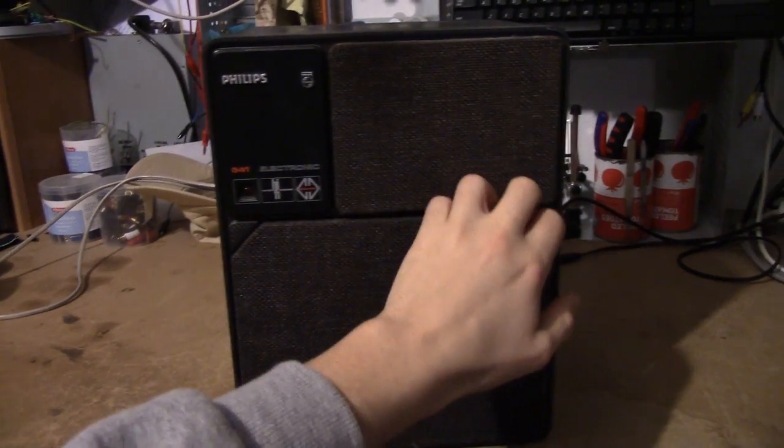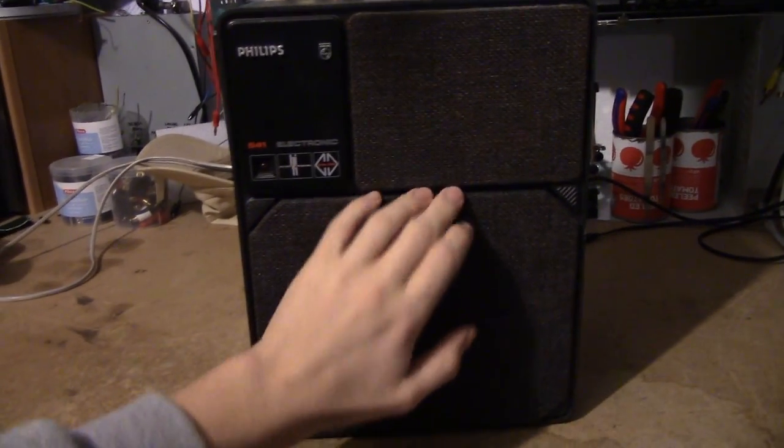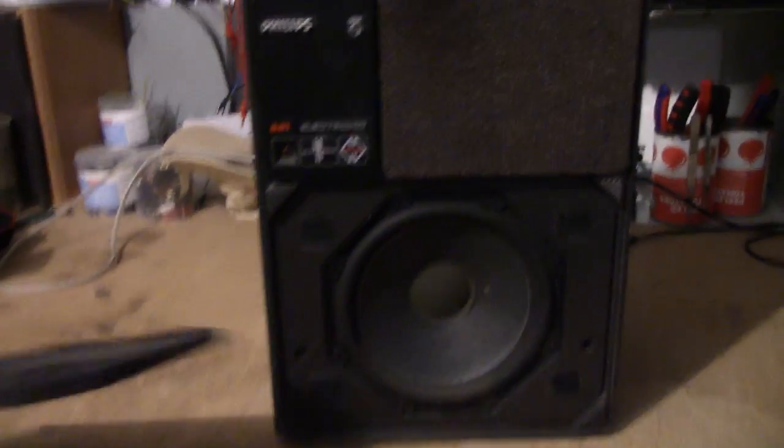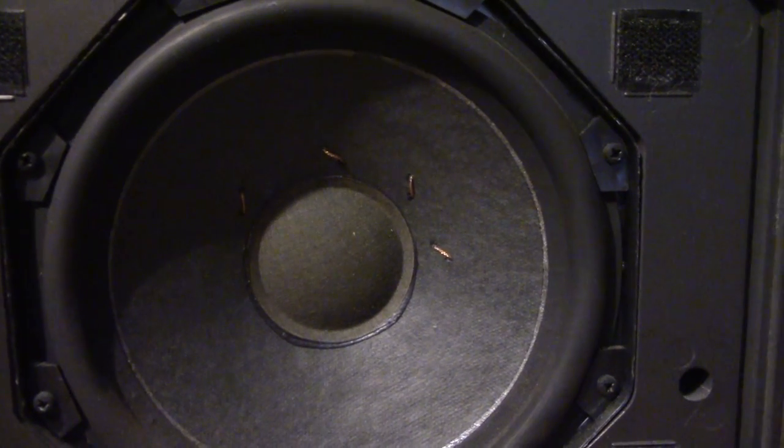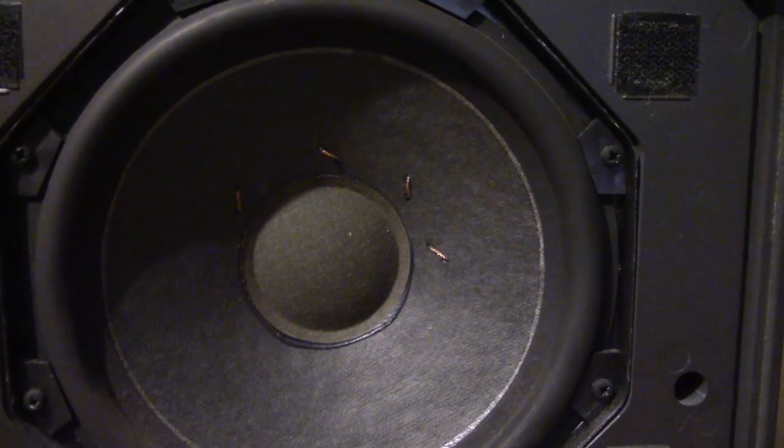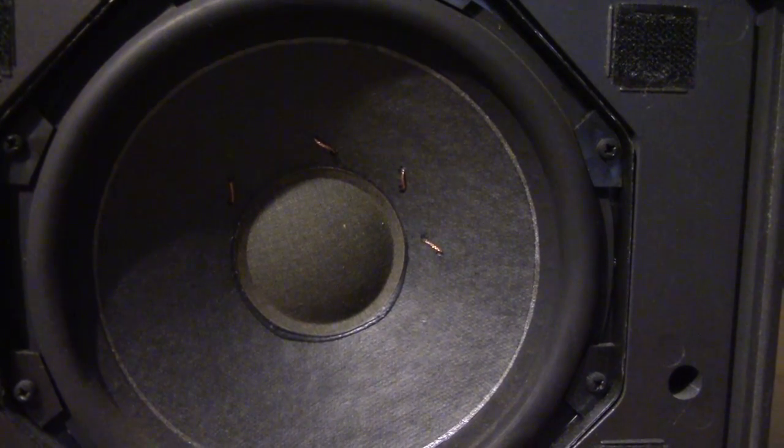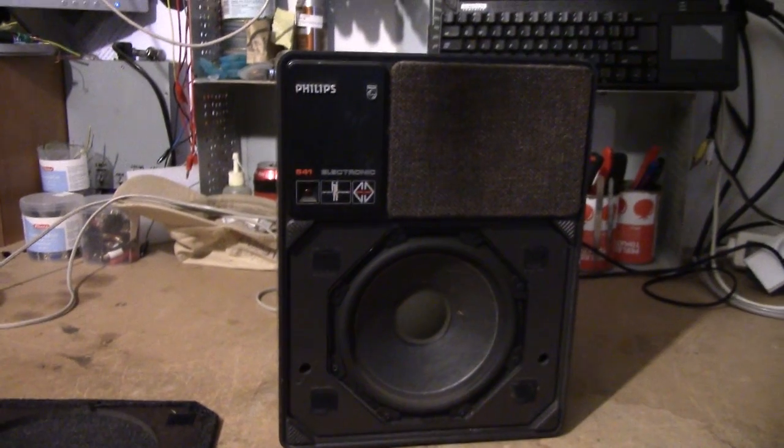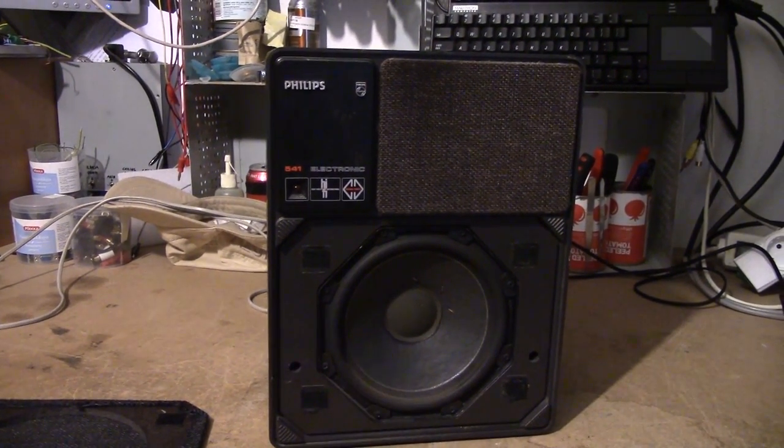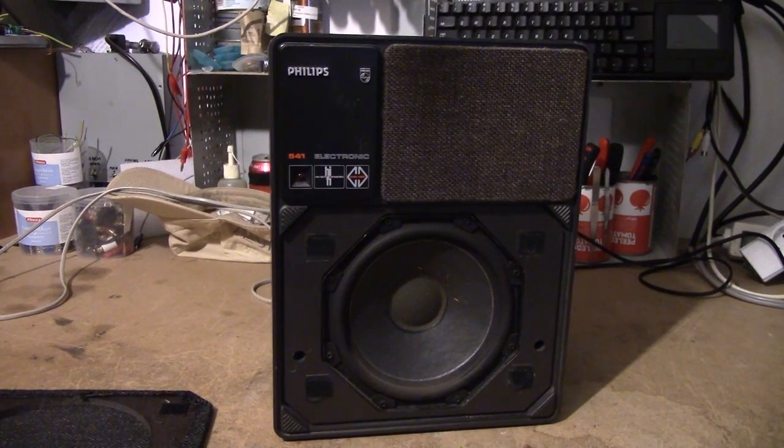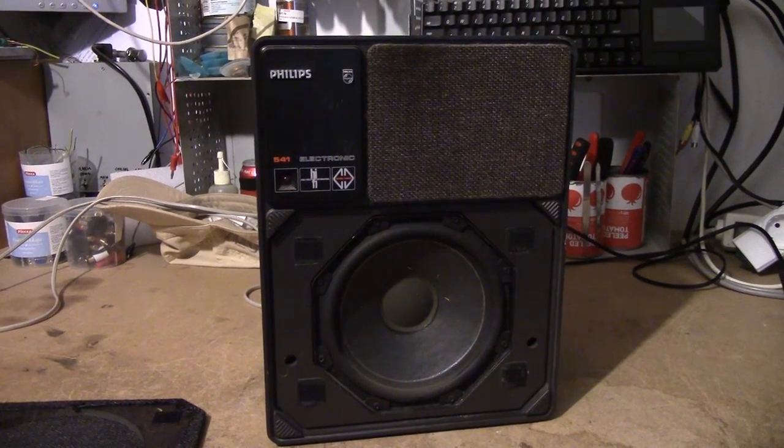Until you get the grill off and have a little squeeze of the woofer, where you can see that rather than just having two wires, it's actually got four wires connecting it to the system. And that's because this speaker has an accelerometer mounted in the actual woofer, which is feeding into the feedback network of the amplifier.